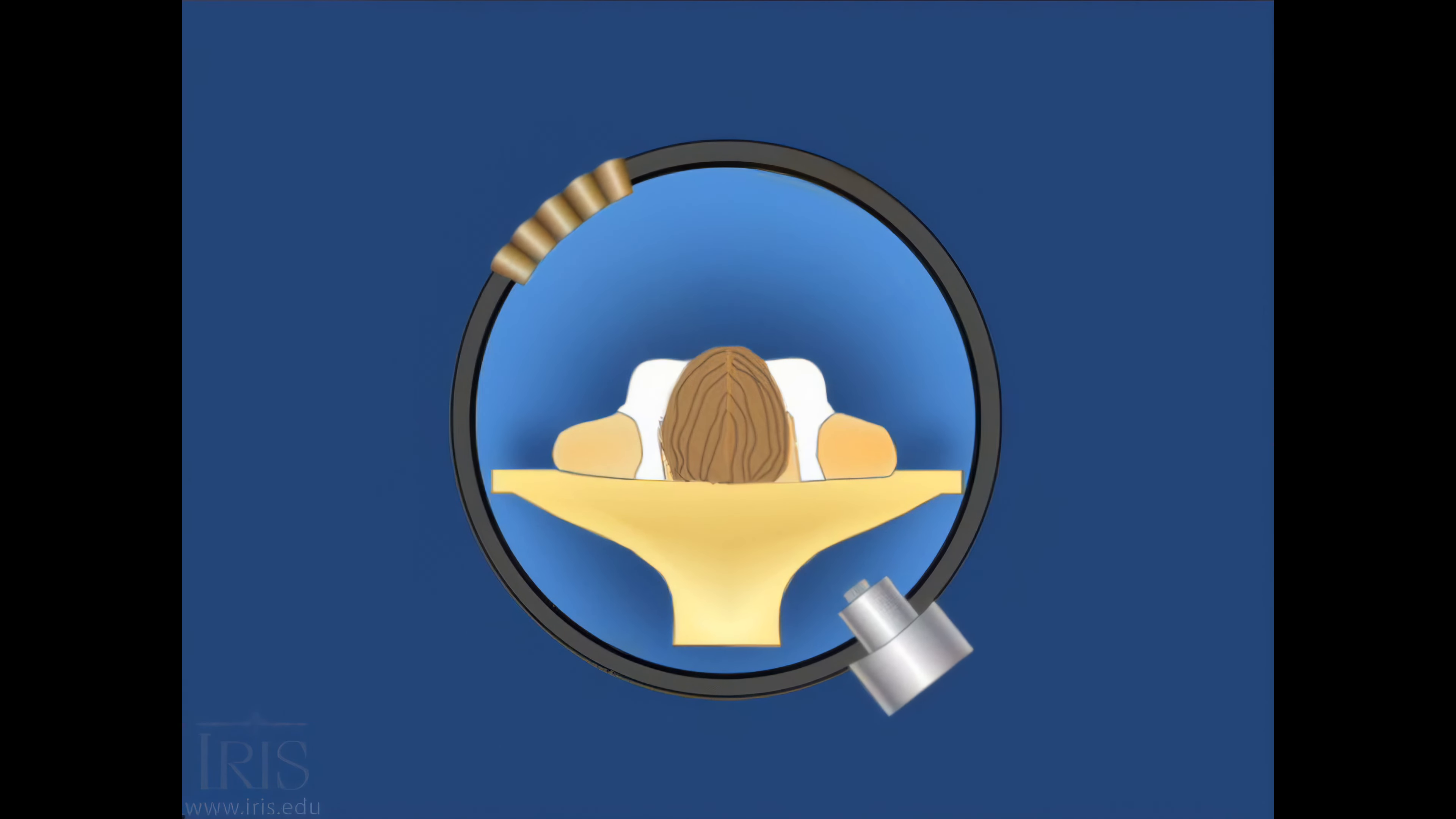Multiple snapshots collected during one complete rotation are sent to a computer to create a cross-sectional image or slice of the body.